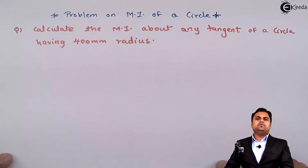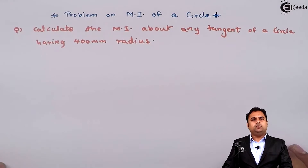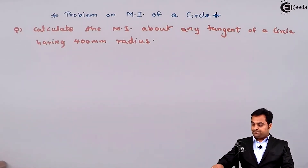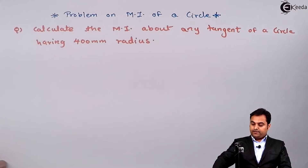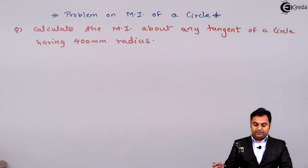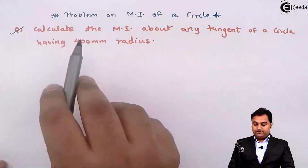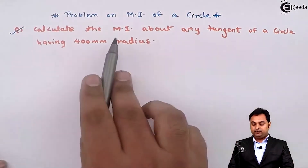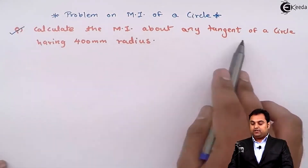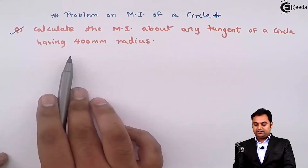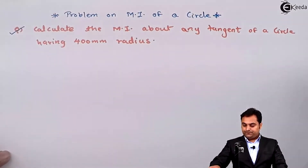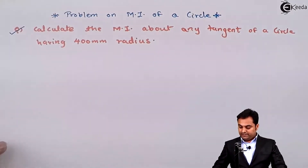Hello friends. In this video we will see a problem on moment of inertia of a circle. The question is: calculate the MI about any tangent — that is, moment of inertia about any tangent — of a circle having 400 mm radius. I'll draw the diagram.